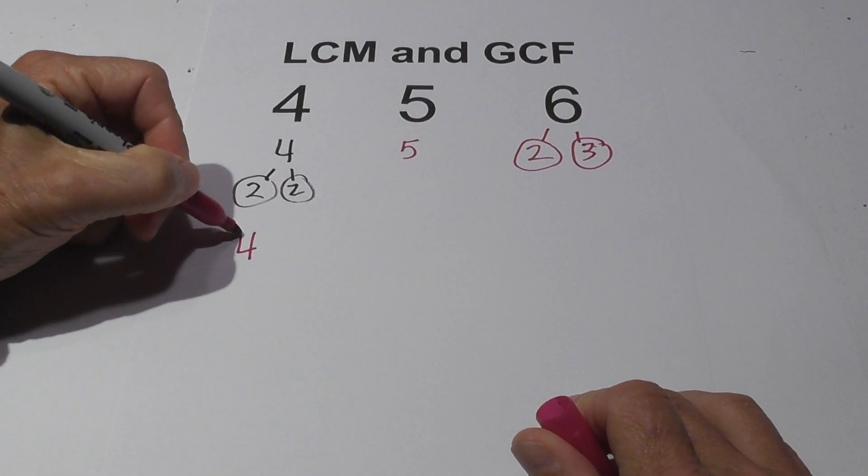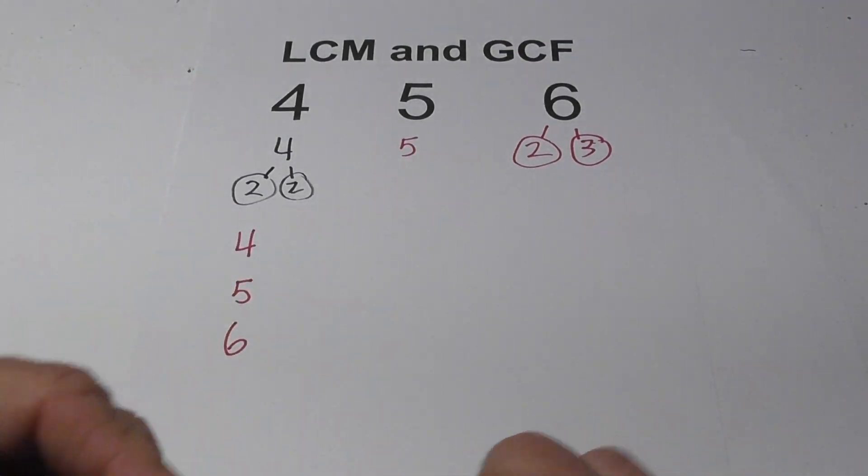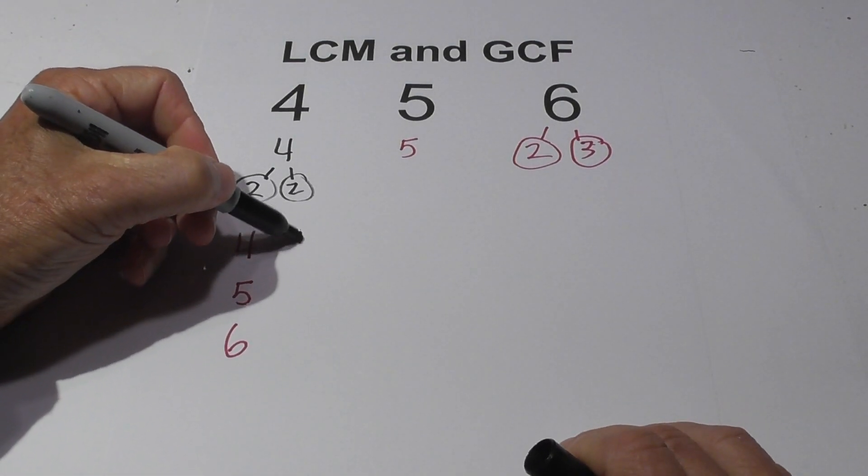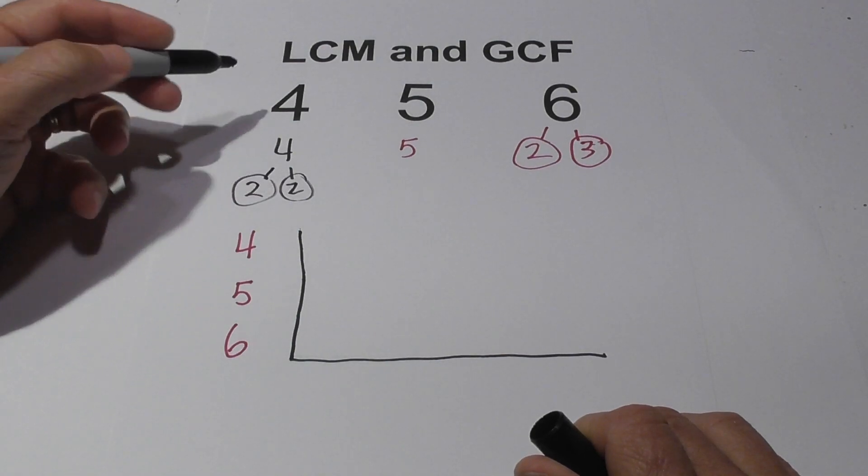Now what I do is I've placed them in a little chart. Okay, so we have 4, 5, and 6, and this just helps you not make mistakes. What I do is I write down the prime factors for each of these.